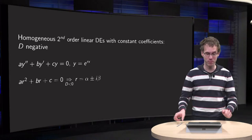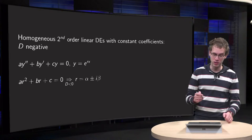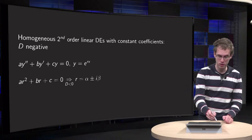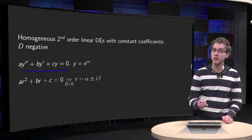That's what you will learn in this video. So we have a homogeneous second-order linear differential equation with constant coefficients, like this. But now d is negative.